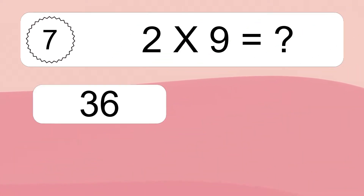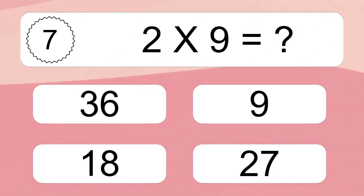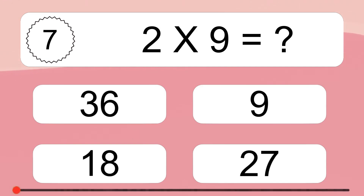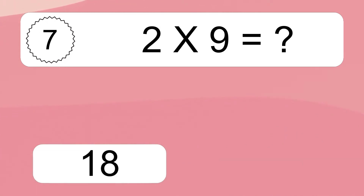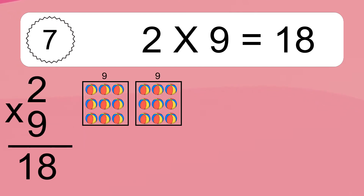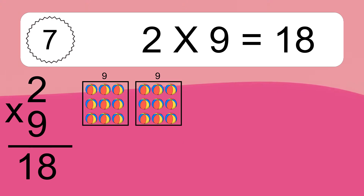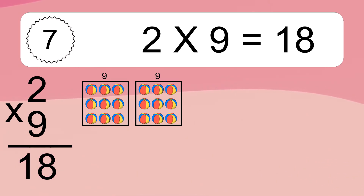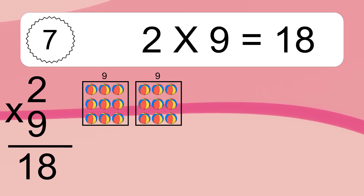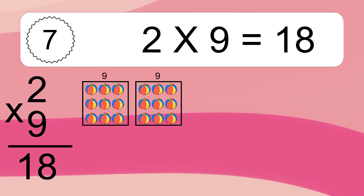Three times nine equals what? Four times five equals what? Ten times six equals what? We have 2 boxes, and each box has 9 colorful balls inside. If you count all the balls in all the boxes together, you will have 2 times 9 balls. This equals 18 balls.